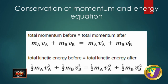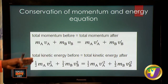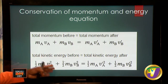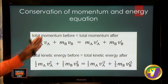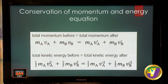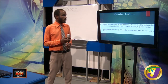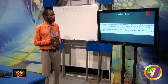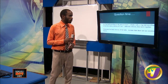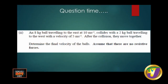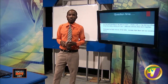A quick question: a 1 kg ball traveling east at 10 m/s collides with a 2 kg ball traveling west at 5 m/s. After collision, they move together — determine the final velocity. Unfortunately, we don't have time to work through it fully today, but we'll communicate about it. That's all for today's CSEC physics lesson on forces and motion.